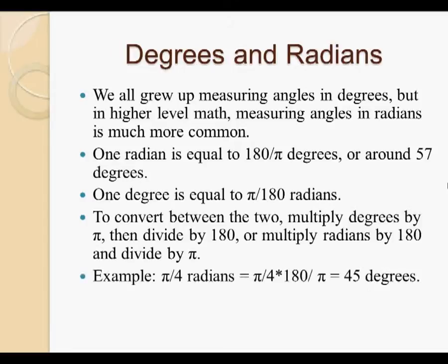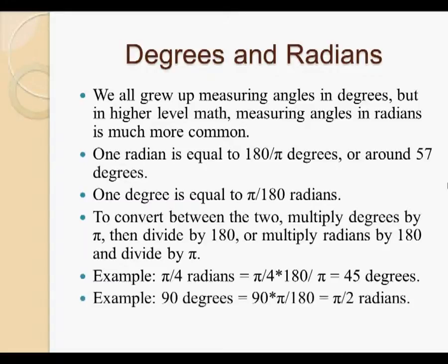For example, pi by 4 radians. By the way, we usually call pi divided by 4, we refer to that as pi by 4. So we don't say pi divided by 4 radians, or pi over 4 radians, we say pi by 4 radians. It's fast and easy to say. So pi by 4 radians equals pi by 4 times 180 divided by pi. Notice that the pi's cancel each other out. So the answer we come up with is simply 45 degrees. Another example, 90 degrees equals 90 times pi divided by 180 equals pi by 2 radians.